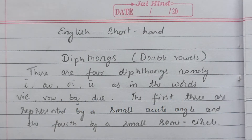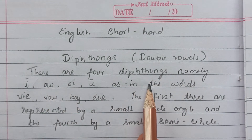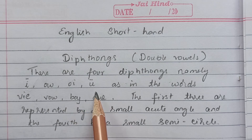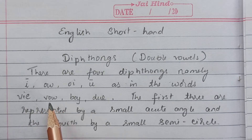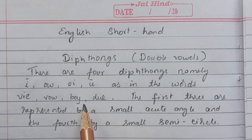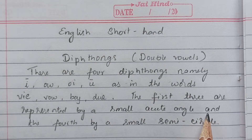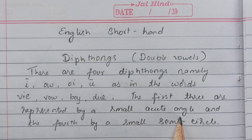Welcome to our English shorthand easy learning class. In today's class we'll start with the new topic: diphthongs. Diphthongs are nothing but double vowels, and we have four diphthongs in shorthand, mainly I, O, I, and U, as in the words I, E, O, O, W, Y, O, I and U.